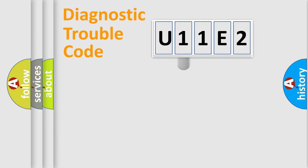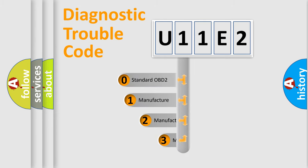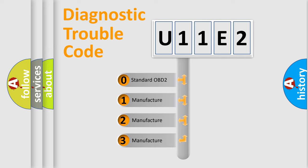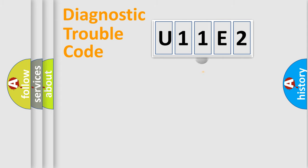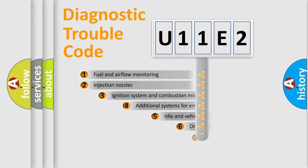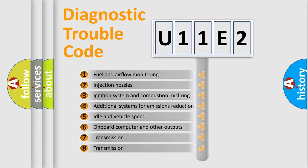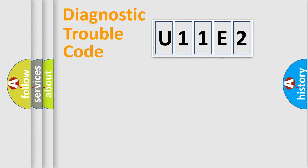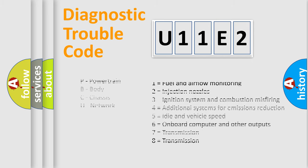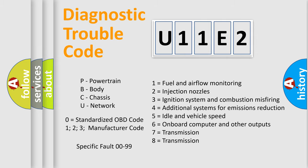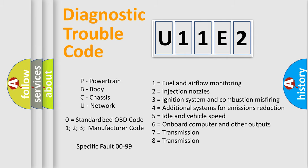This distribution is defined in the first character of the code. If the second character is expressed as zero, it is a standardized error. In the case of numbers 1, 2, or 3, it is a more specific expression of a car-specific error. The third character specifies a subset of errors. Only the last two characters define the specific fault of the group, and this division is valid only when the second character is zero.